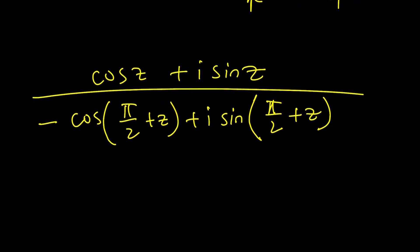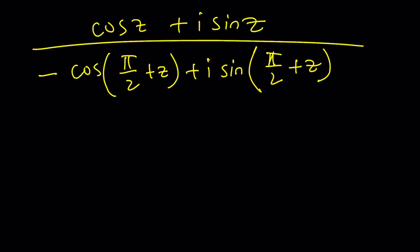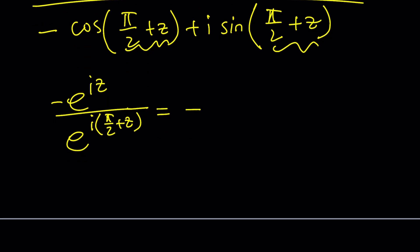Just ignore the minus sign. We can divide these. How do you divide two numbers in polar form? You can write these as e to the iz divided by negative e to the power i times pi over 2 plus z. When you divide these, you subtract the exponents: e to the power negative i times. If you subtract z minus pi over 2 plus z, that's going to give you minus pi over 2.